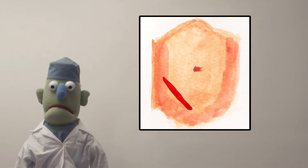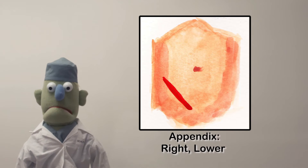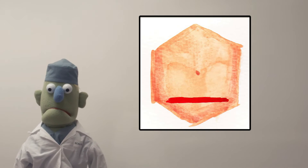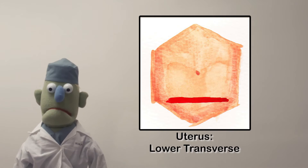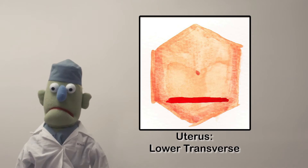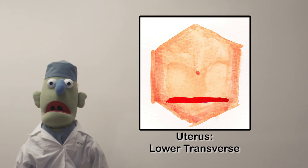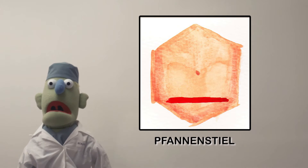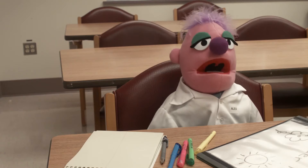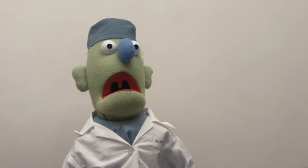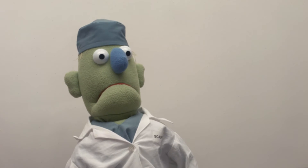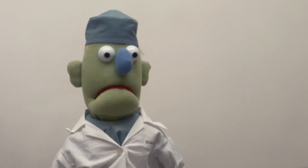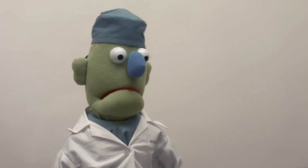If you're looking for the appendix, your incision will be on the right lower quadrant of the abdomen. If you're after the uterus, tubes, and ovaries, your incision will be a lower transverse — that'll be a Pfannenstiel. Hang on a minute, how do you spell that? Don't worry about it — Thumbs will write it down for you later.